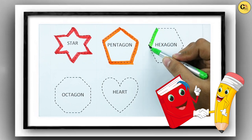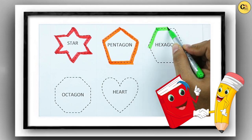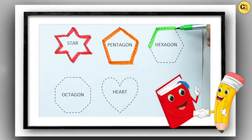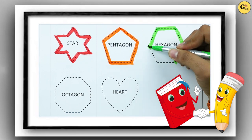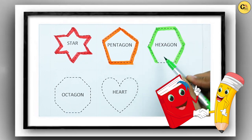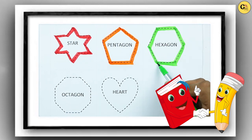Hexagon: one line, two line, three line, four line, five line, six line. It's a hexagon.